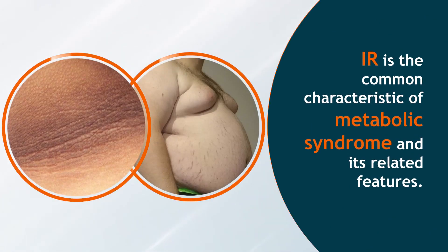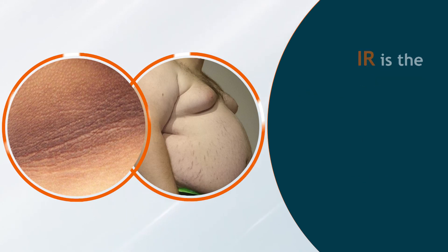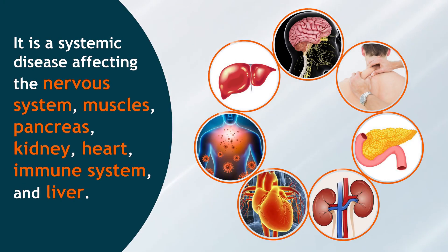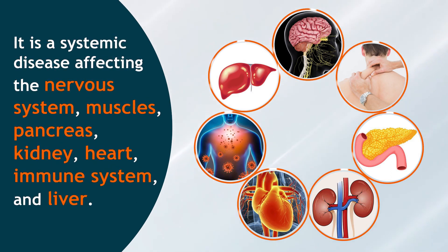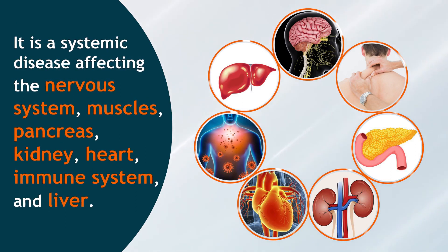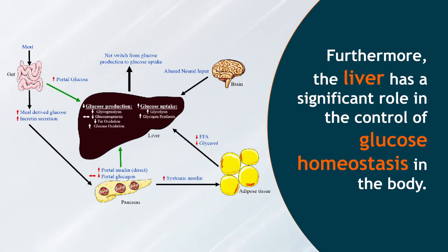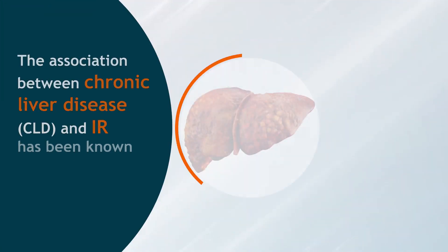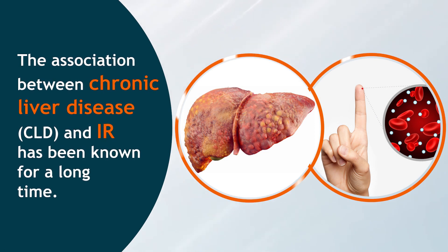IR is the common characteristic of metabolic syndrome and its related features. It is a systemic disease affecting the nervous system, muscles, pancreas, kidney, heart, immune system, and liver. Furthermore, the liver has a significant role in the control of glucose homeostasis in the body.